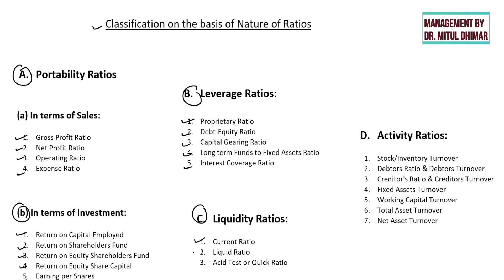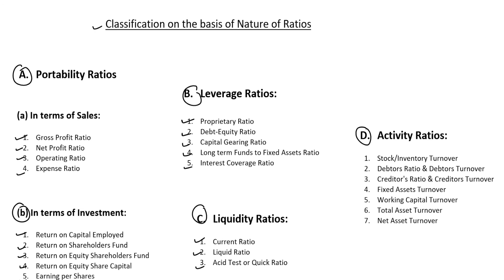The third category is liquidity ratios, used to check the position of liquidity in the business. These cover current ratio, liquid ratio, acid test or quick ratio. The fourth category is activity ratios, which determine how efficiently the assets of the company are being used by management to generate maximum possible revenue. This category covers stock or inventory turnover ratio, debtors' turnover ratio, creditors' turnover ratio, fixed asset turnover, working capital turnover, total asset turnover, and net asset turnover.